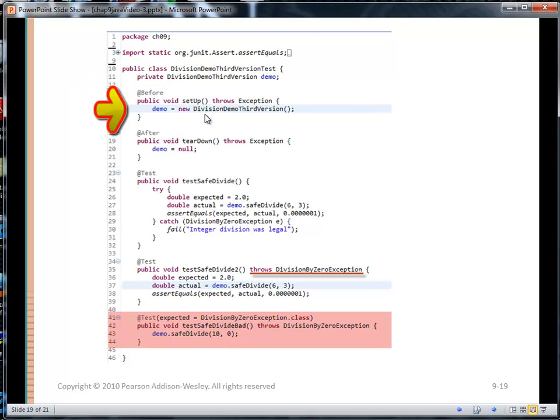And here are the test cases that I created. I do have a private data member to hold a division demo third version instance. I'm going to put in a variable called demo. In setup, I'll create the instance and I'll tear it down in teardown. And I've got three different tests. I've got a test to see if things work correctly. So here I have the try catch block. Since I'm calling the safe divide method, and it can throw an exception, I am going to catch it if I have something unsuccessful.